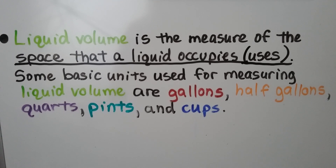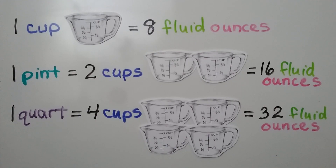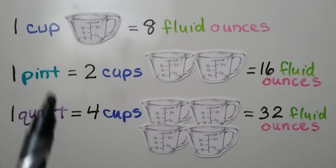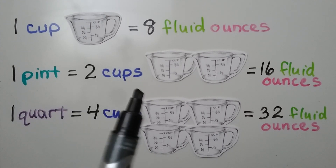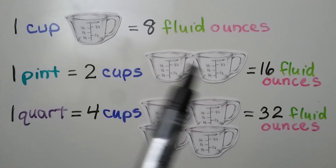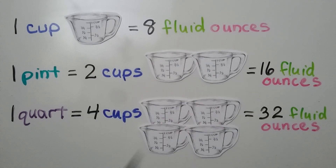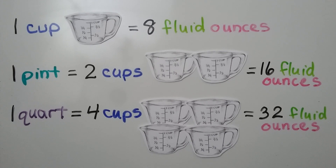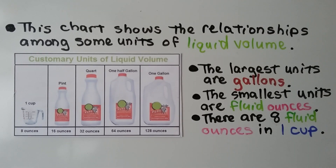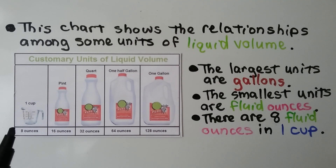One cup is equal to eight fluid ounces. One pint is equal to two cups, so that's two times eight — 16 fluid ounces. One quart is equal to four cups, so that would be 32 fluid ounces. This chart shows the relationships among some units of liquid volume.